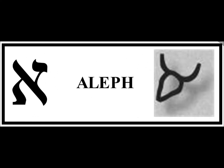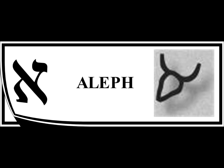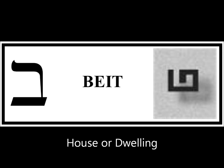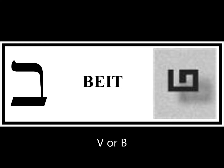Let's take a look at the Hebrew alphabet, the Aleph Beit. The first letter is Aleph, and its sound is silent. Its numerical value is one, and it is a picture of an ox head. Beit is the second letter. It is a picture of a house or a dwelling, and its numerical value is two. It can have either a V sound or a B sound, depending on the markings and where it appears in a word.